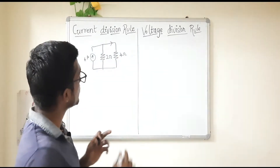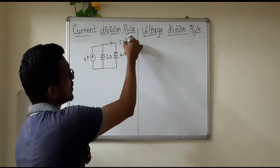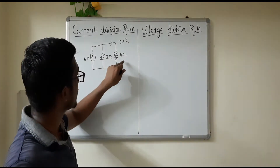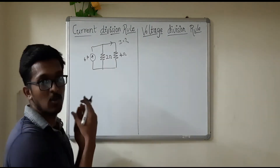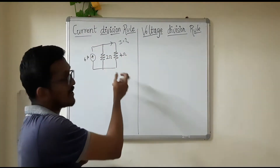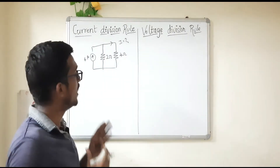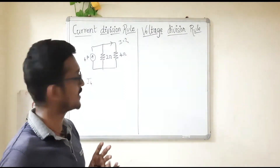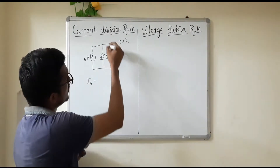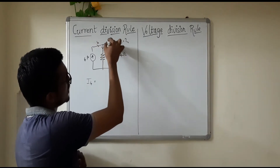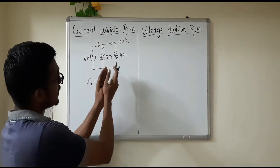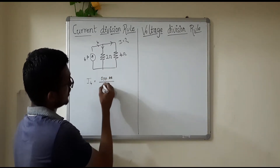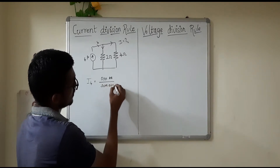If we want to find the current in the 4 ohm resistance, we apply the current division rule for the parallel circuit. What is the formula? The formula is: opposite resistance divided by the sum of resistances, into total current.